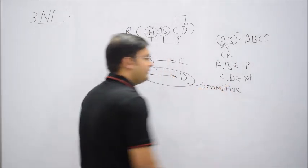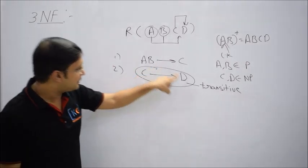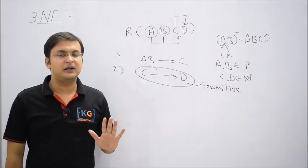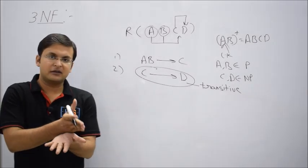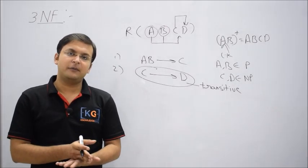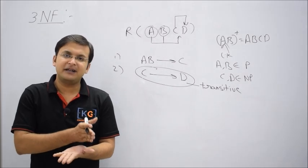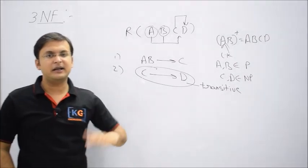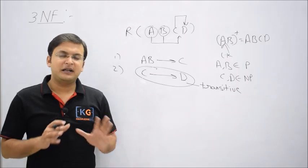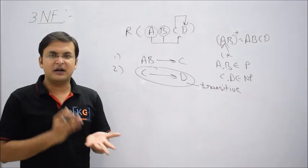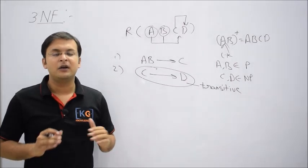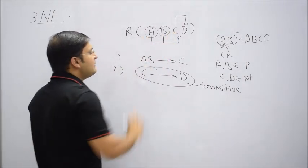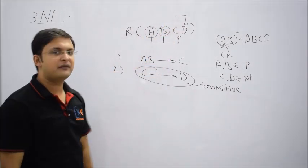When a non-prime attribute determines another non-prime attribute, that is a case of transitive dependency, and third normal form does not allow transitive dependency. There are two definitions of third normal form: first, a table is in third normal form if it is in second normal form and has no transitive dependency; or directly, a table is in third normal form if it has neither partial dependency nor transitive dependency. If there is no partial or transitive dependency, the table is in third normal form.